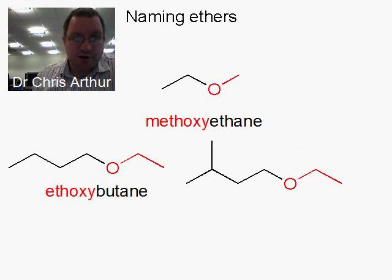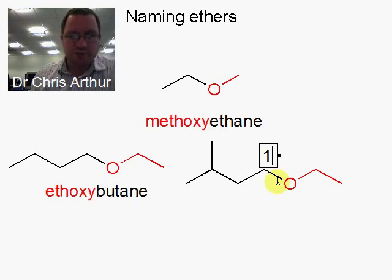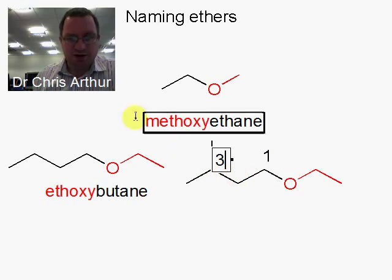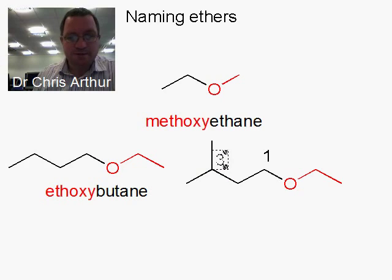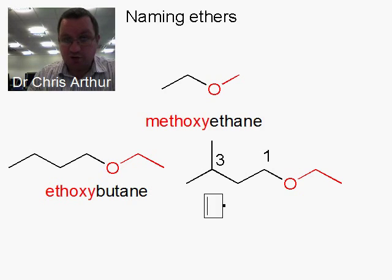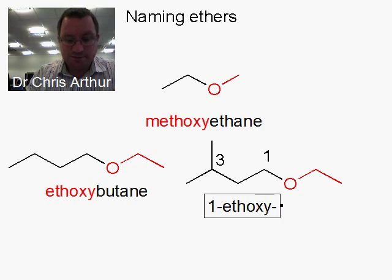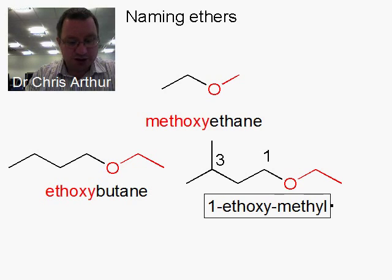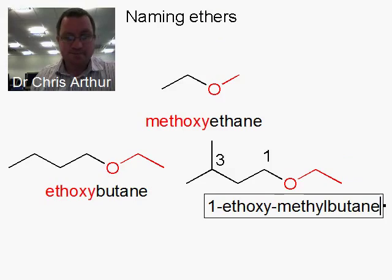So we start numbering from the ethoxy group. That is carbon number one. We have one, two, three — so this methyl group is on carbon three. Remember we're doing this in alphabetical order, so it's 1-ethoxy-3-methyl, and it's a butane chain, so it's 1-ethoxy-3-methylbutane.